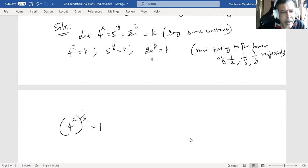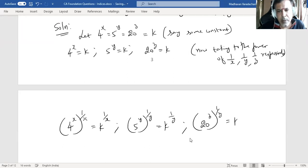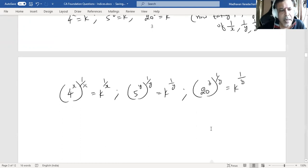So 4 power x to the power of 1 by x will equal k power 1 by x. Similarly, 5 power y to the power of 1 by y equals k power 1 by y, and 20 power z to the power of 1 by z equals k power 1 by z.